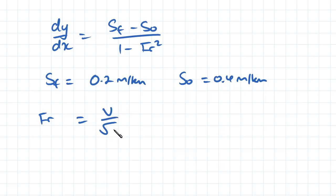So Froude number is equal to velocity divided by the square root of gravity multiplied by the flow depth. So we know that our velocity...